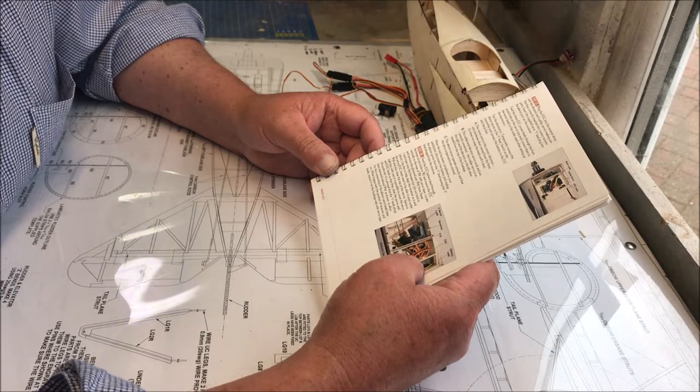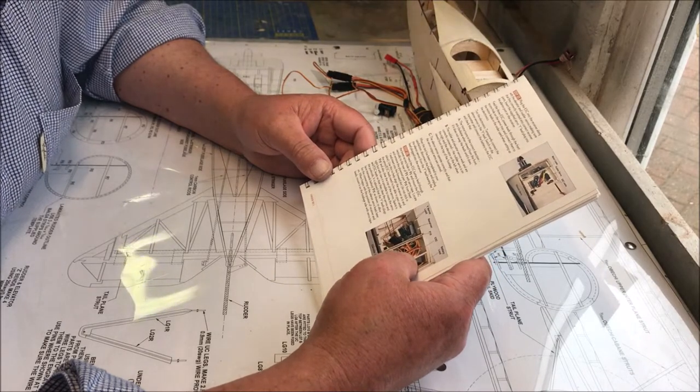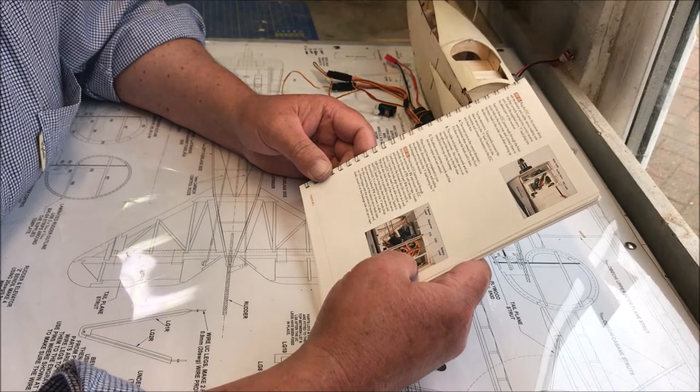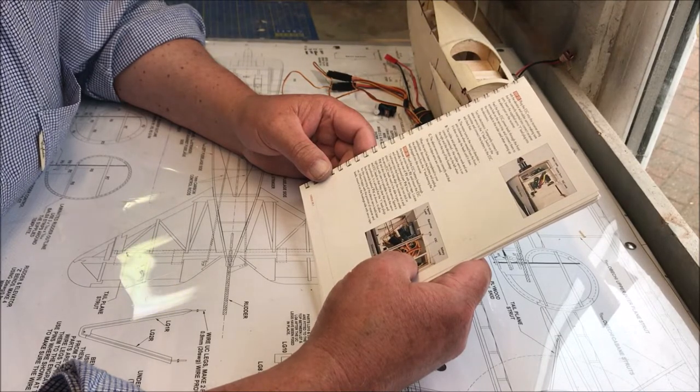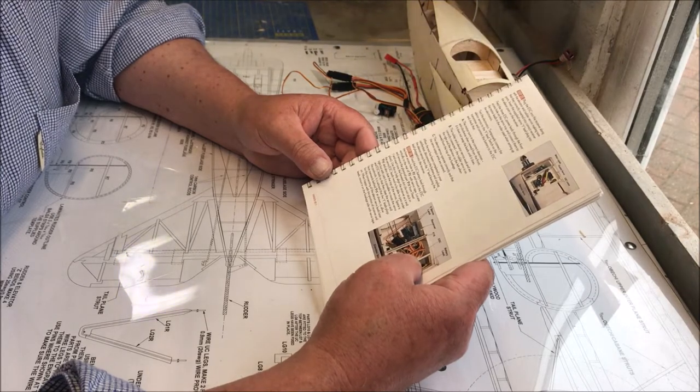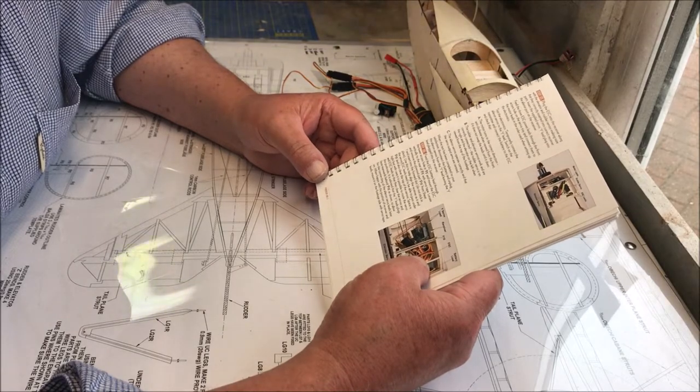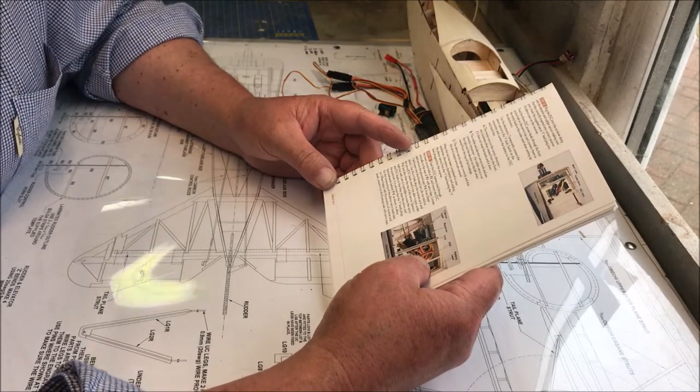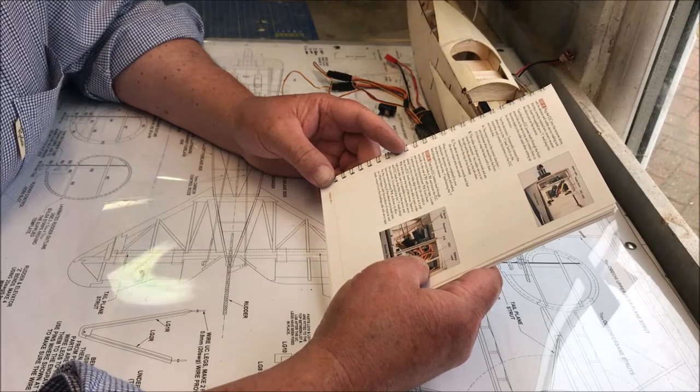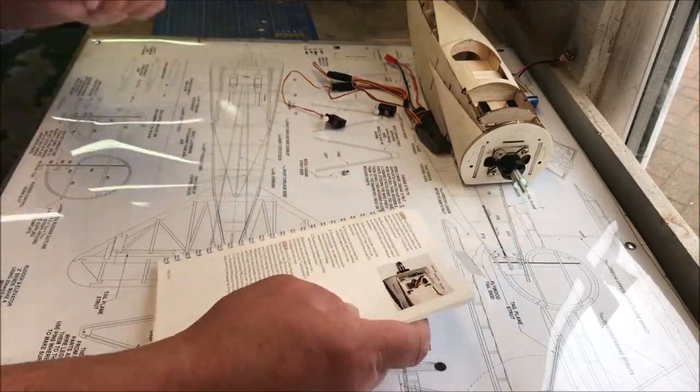Feed the ESC battery leads through the lower access hole F3 and mount the ESC vertically to the rear of F3 with servo tape. I would recommend using velcro because if you need to gain access to it, it'll come off fairly easily. It's up to you, that's what I recommend. Locate and remove the plywood pads F15 from sheet 7.